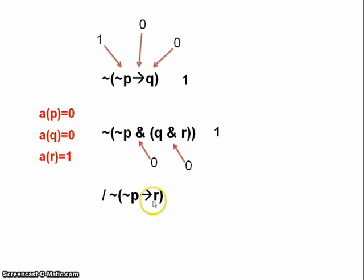Finally, well, R is true on our conditional. If not P, then R. R is true. So that means that our conditional is true. But it's negated. So the whole formula is false.